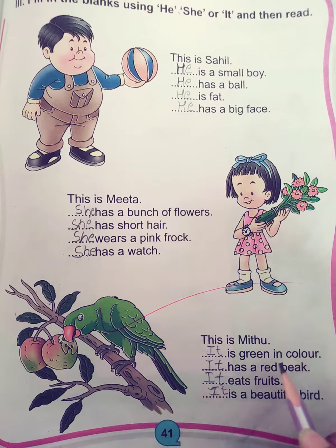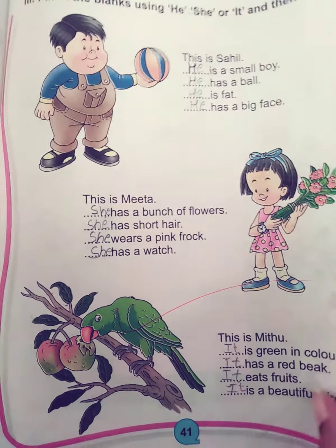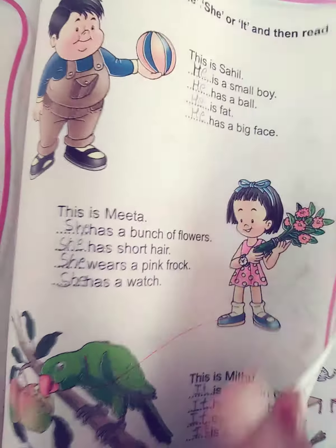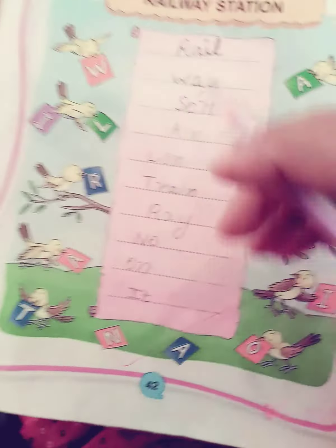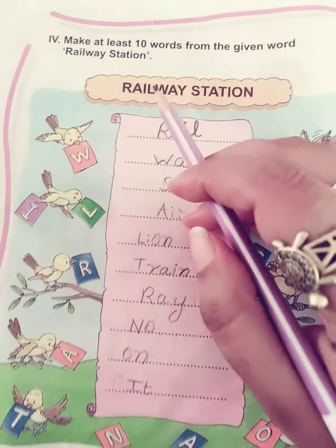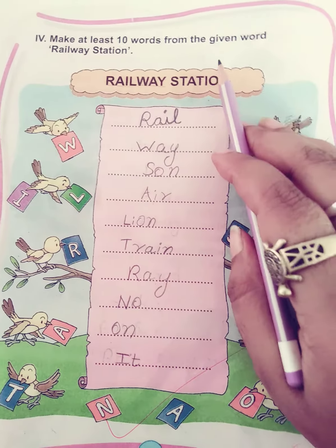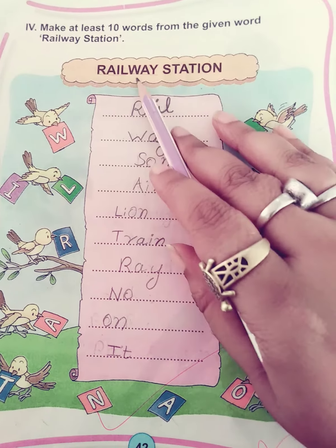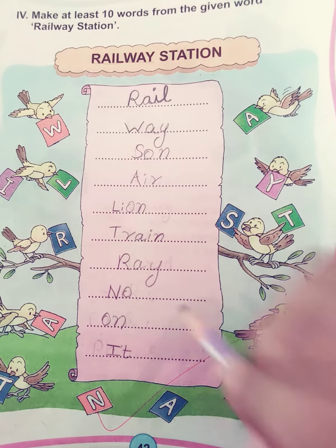This is a bird — it is green in color, it has a red beak, it eats fruit, it is a beautiful bird. Now the last worksheet: make at least 10 words from the given word 'railway station' — from this word you have to make 10 words.